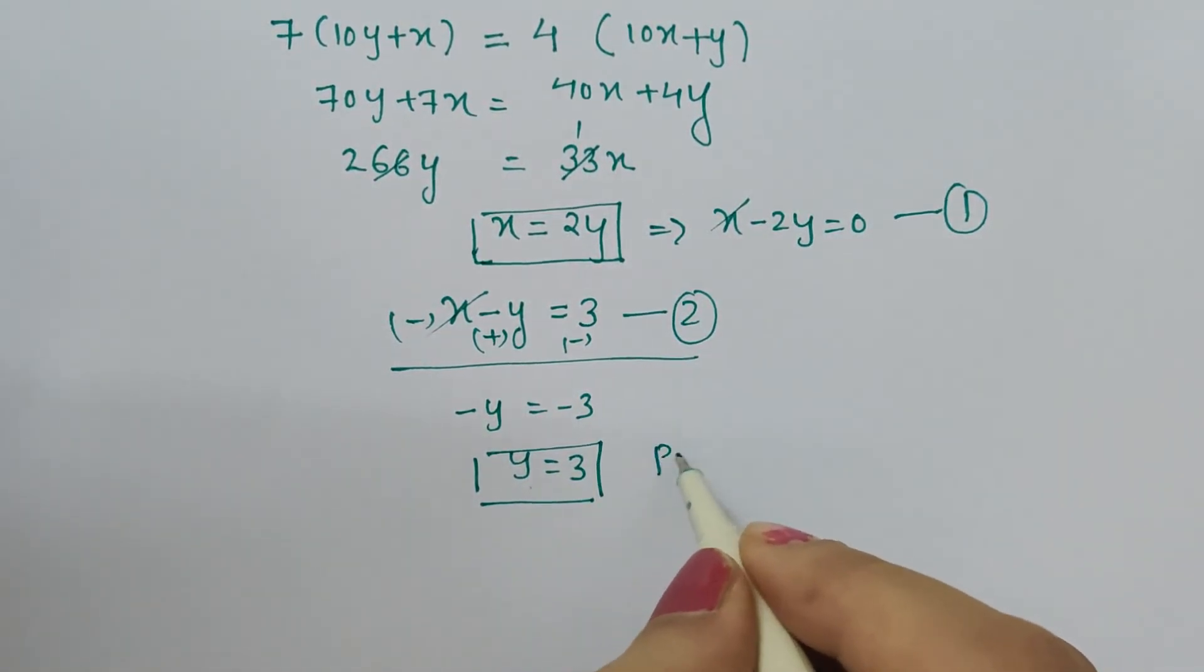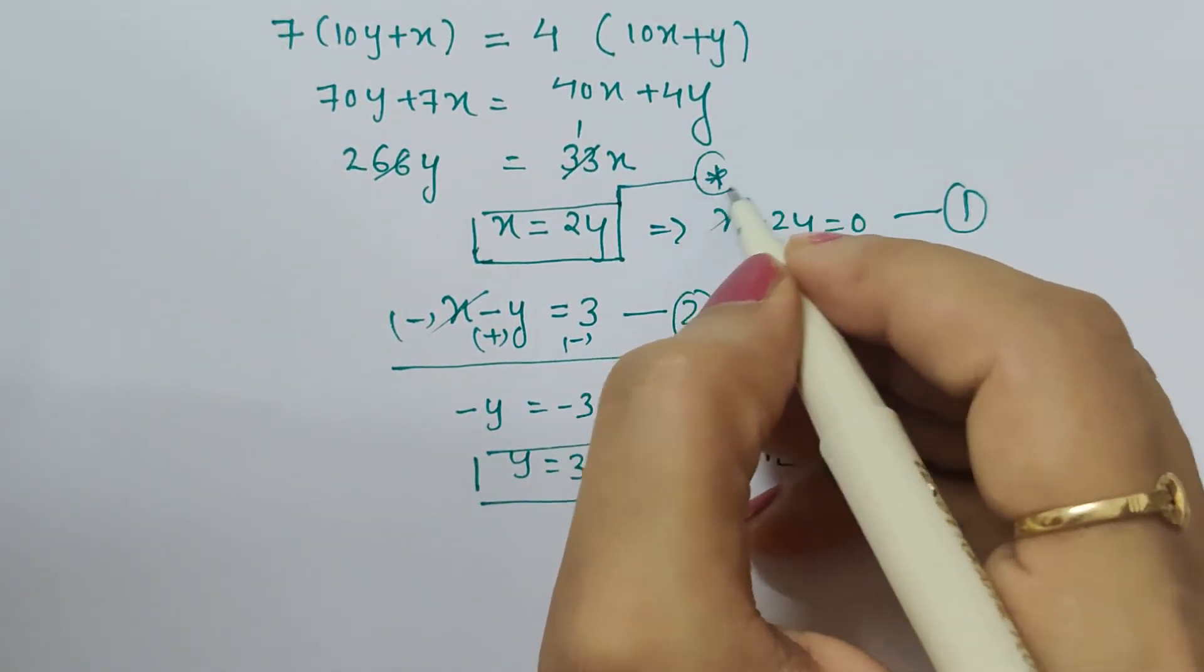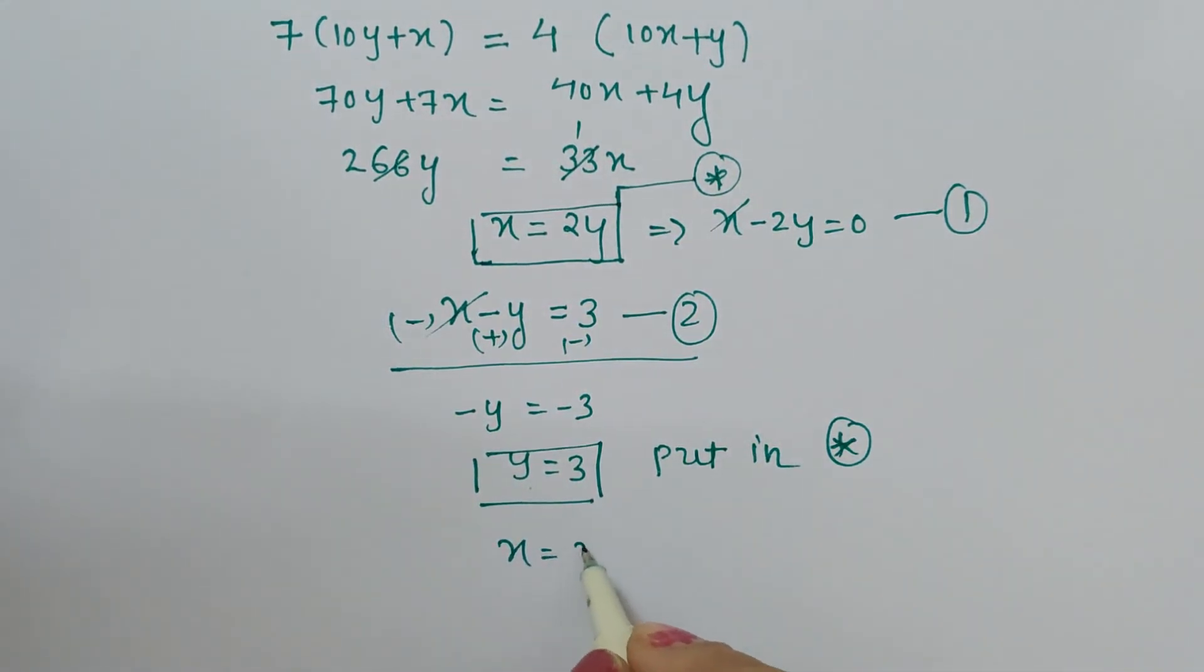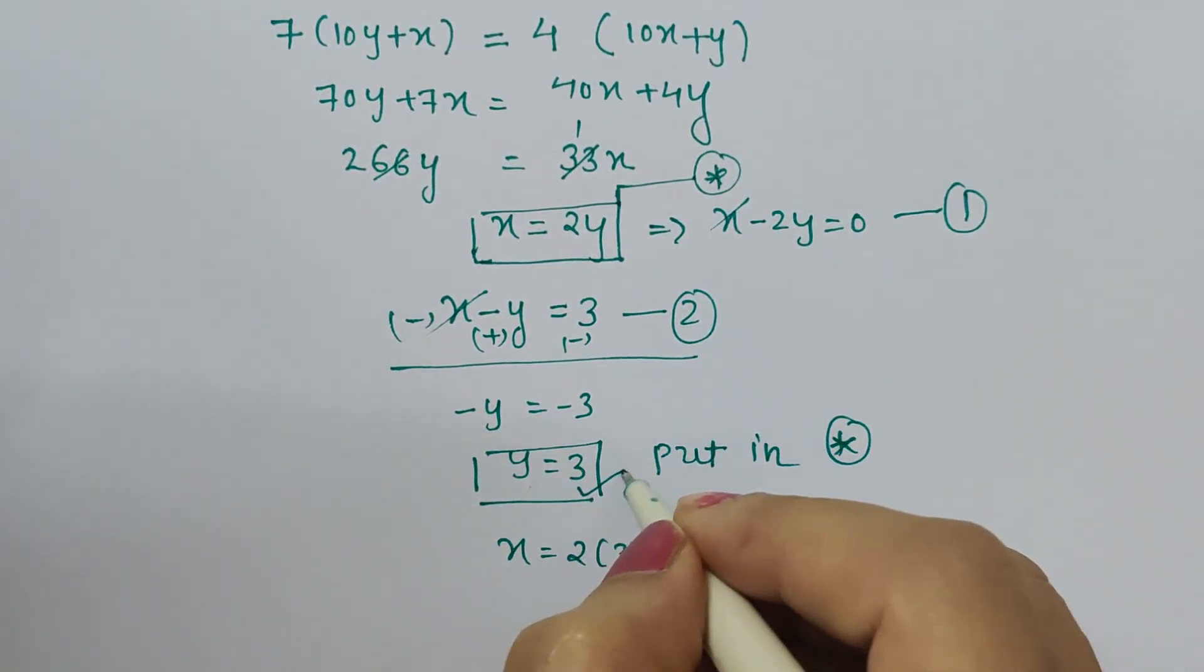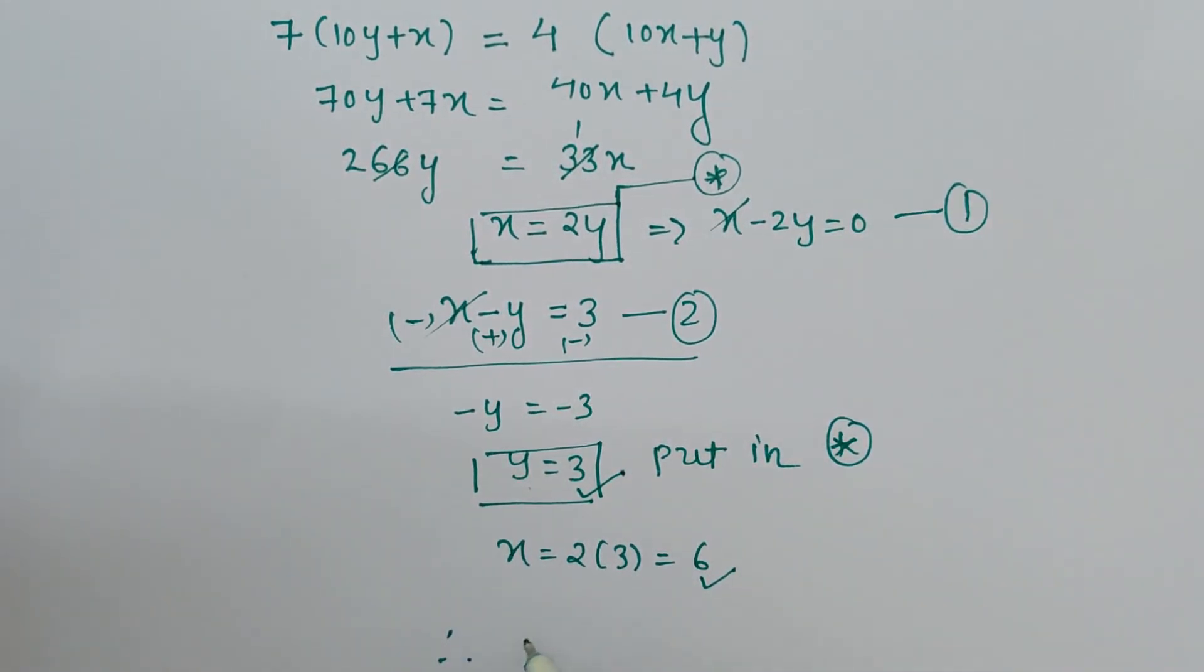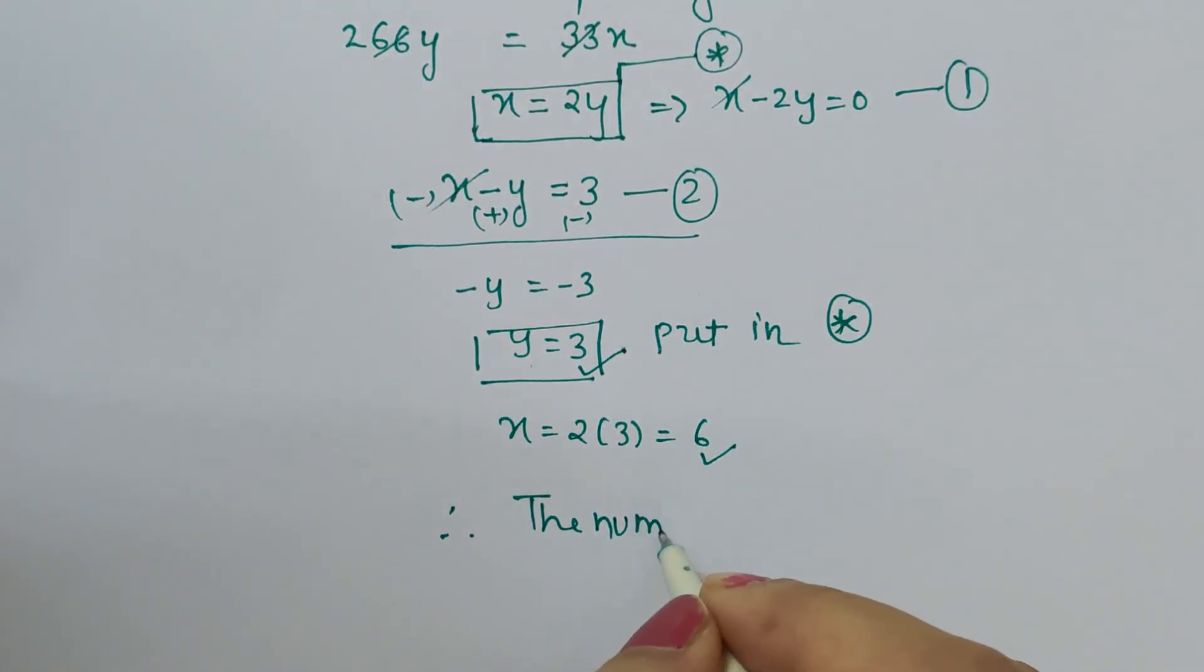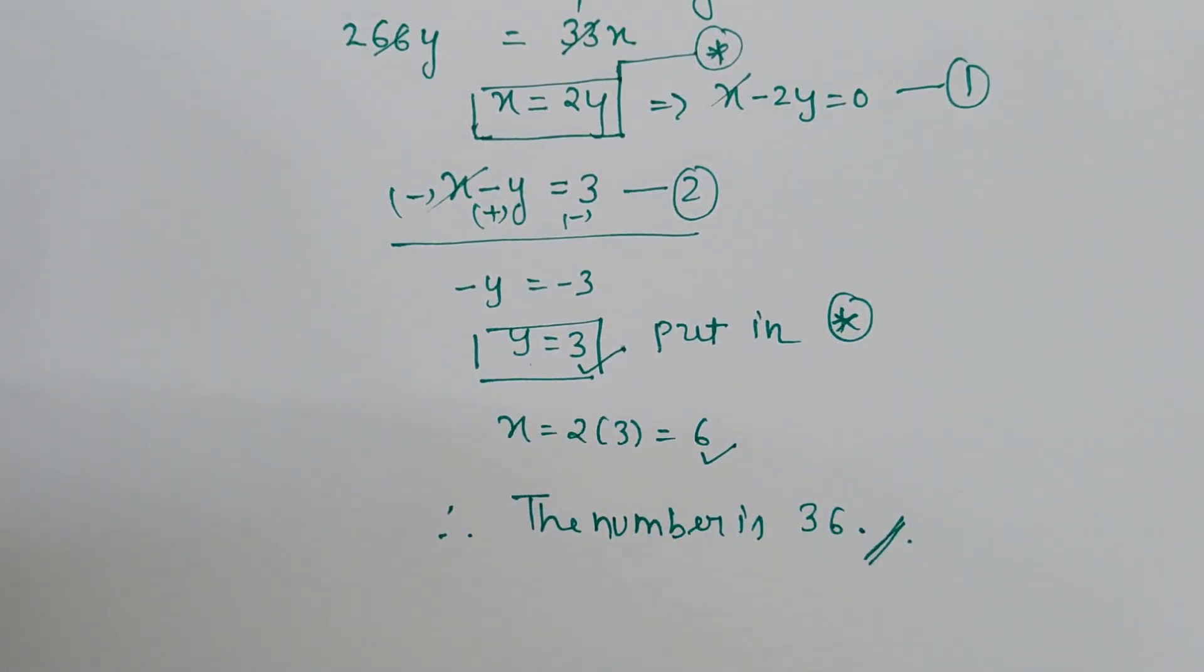Now we can easily get value of x once it is substituted. So what do we get? x is equal to two times three which is six. So the unit place digit is 6 and tens place digit is 3. Therefore the number is 36. This is how this is to be calculated. Thank you.